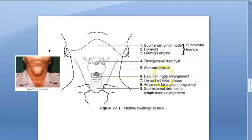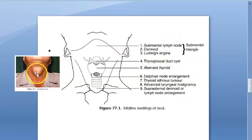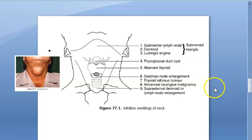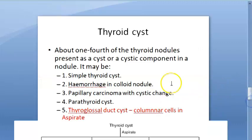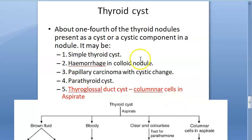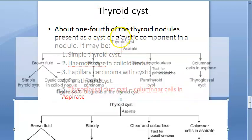To differentiate all of these: a thyroglossal cyst will move when the tongue is protruded in and out. There are other differentials as well — a thyroid cyst, for instance, can be a simple thyroid cyst.